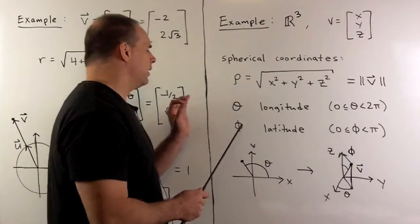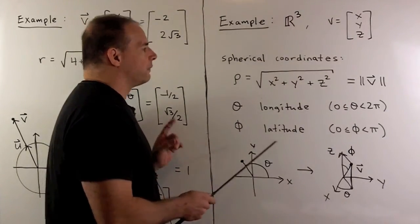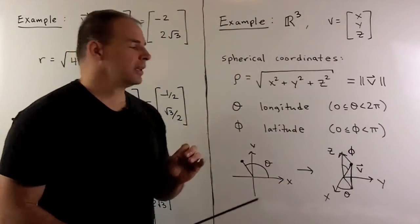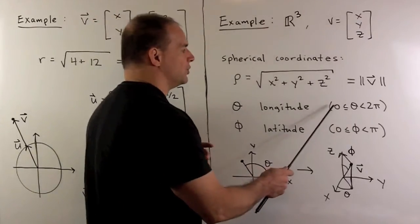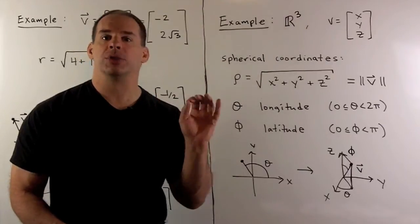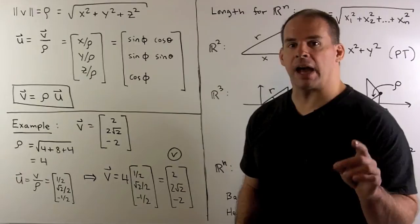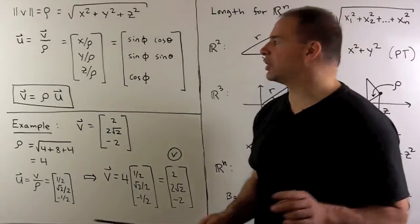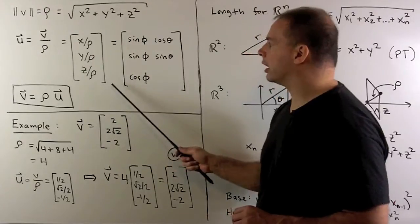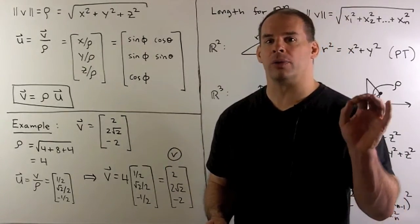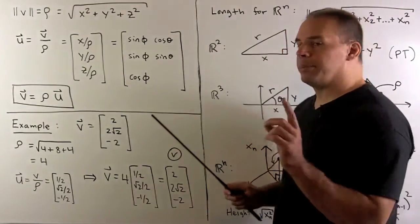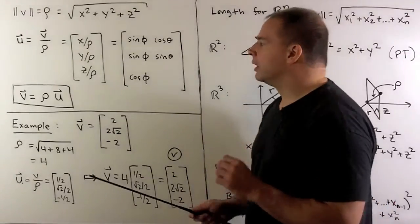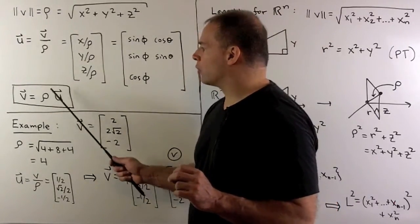Note: if we fix theta and let phi vary from zero to pi, we get a longitude line. If we fix phi and let theta vary from zero to 2π, we go in a circle and get a latitude line. Getting back to factorizations, we have a formula for rho, and if v is a non-zero vector, we can find the unit vector pointing the same direction by dividing by rho. If we want to find the theta and phi that go with our unit vector, we have those equations, but this problem is better suited for a multivariable calculus class. So, for non-zero v, we have the factorization v = ρ · u.